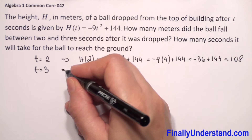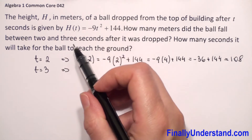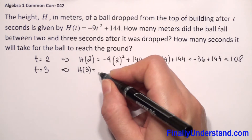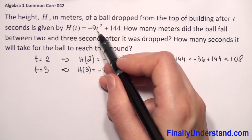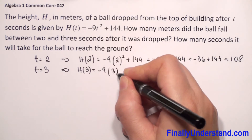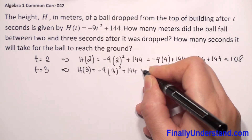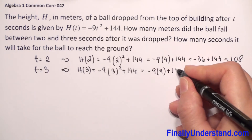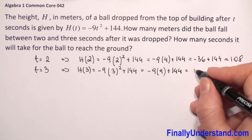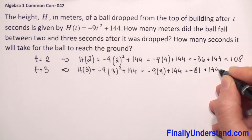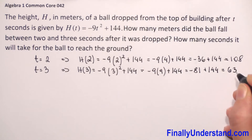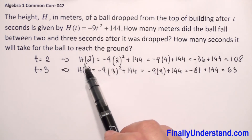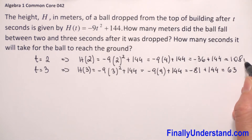Now we calculate the height at the third second: h(3) equals negative 9 times 3 squared plus 144. This equals negative 9 times 9, which is negative 81, plus 144.